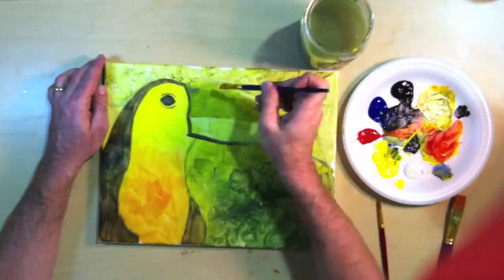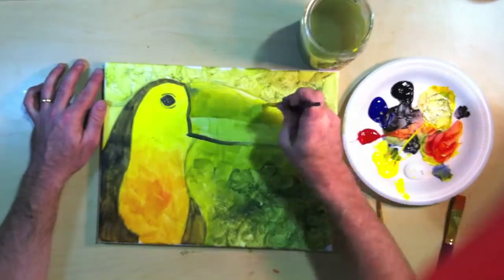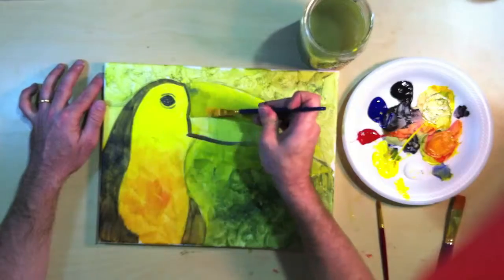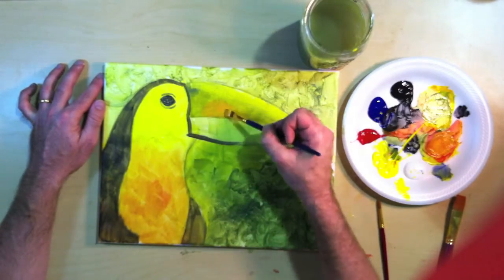Up on top of the beak there's going to be a highlight and so we'll put a little bit of white. I'll blend it in with the yellow. Later on when I do my second layer over my background, this beak will really start to pop off the page.